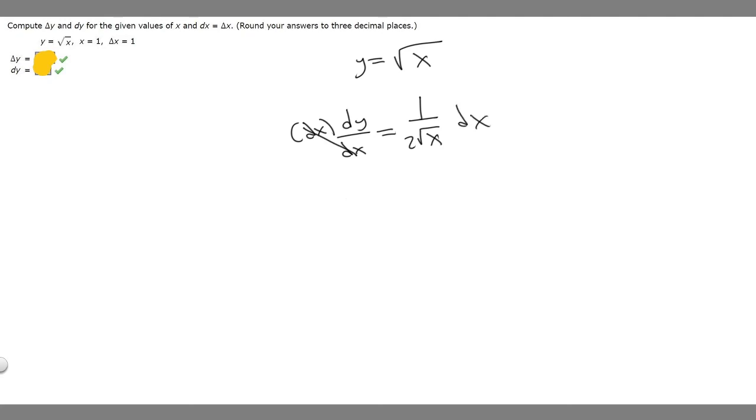And so that's going to get a dx on this side. So dy is going to be equal to 1 over 2 rad x times dx. And what we need to do is plug in our value for x and our value for dx.